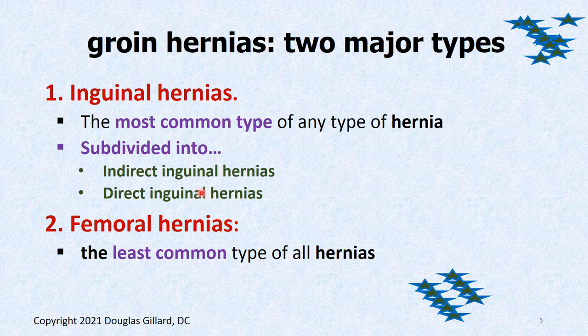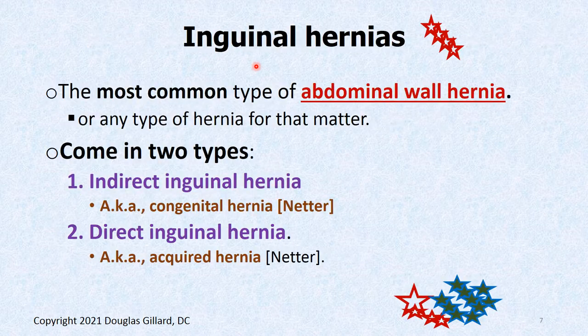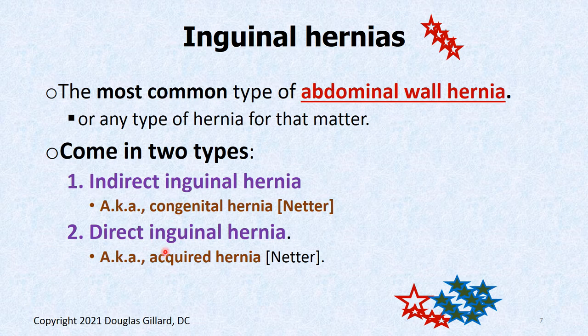This is a very important slide to memorize. Groin hernia falls under the category of abdominal wall hernia. Some authors call indirect hernias congenital hernias, while direct inguinal hernias are acquired hernias.